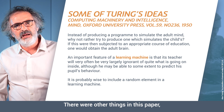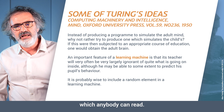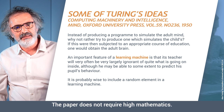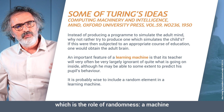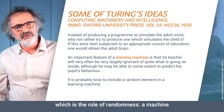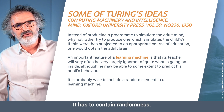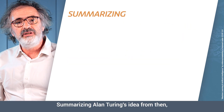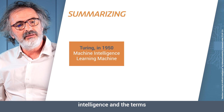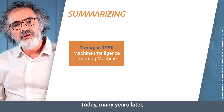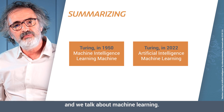There were other discussion points in this paper which anybody can read — it does not require high mathematics. He also stated something we see as very important today: the role of randomness. A machine that is intelligent cannot be deterministic; it has to contain randomness. Summarizing Alan Turing's ideas, he invented the terms machine intelligence and learning machine. Today, many years later, we talk about artificial intelligence and machine learning.